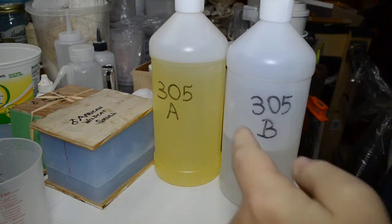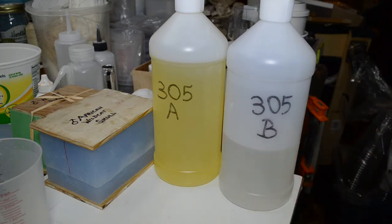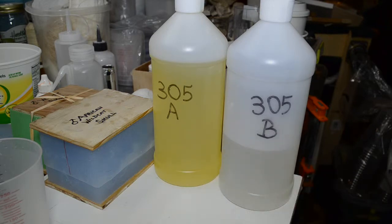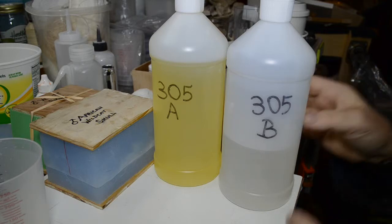First we have the SmoothCast 305. This is a longer setting resin than the standard SC-300, part A and part B. They're used in equal amounts, a one-to-one ratio mix.